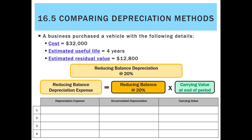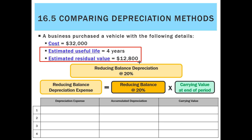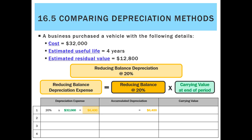Now let's look at the reducing balance method. At 20%, we don't actually need the residual value — all we need is the reducing balance percentage times the carrying value. In year one, the carrying value is the original cost of $32,000 times 20%, giving depreciation of $6,400, with accumulated depreciation of the same amount.